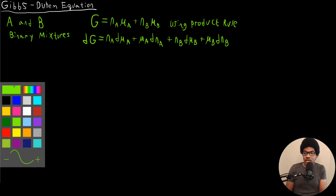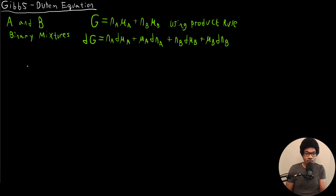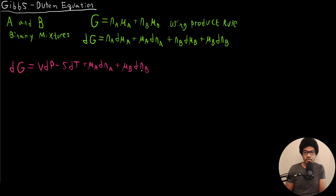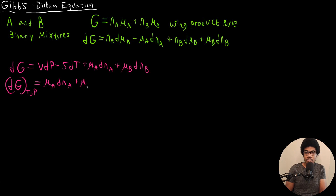We also know that we can obtain another expression for dG. For a two-component system where everything is changing, dG = VdP - SdT + μ_A·dN_A + μ_B·dN_B. And if we hold our natural variables constant — that is, hold temperature and pressure constant — we end up with the expression we looked at in the previous video on partial molar Gibbs energy.